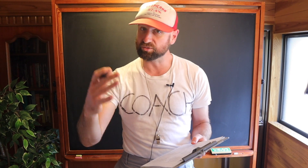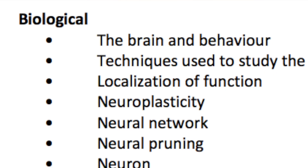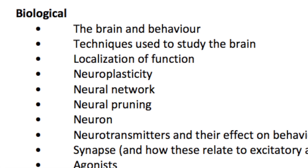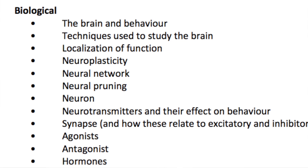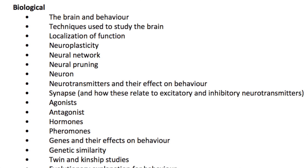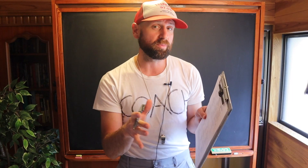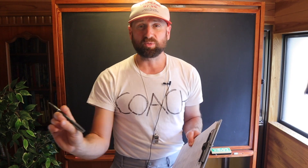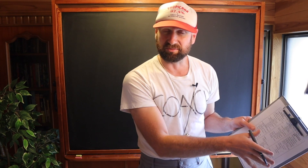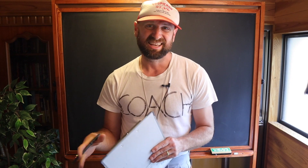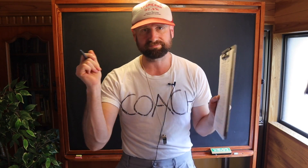Did we get through everything there? I think we did. These are all the possible SAQ questions: techniques to study the brain, localization, neuroplasticity, neural network, neural pruning, neurons, neurotransmitters, synapses — either excitatory or inhibitory — antagonists and agonists, one of each, hormones, pheromones, genes, genetic similarities, and evolutionary explanations of behavior. If you can define what those things are and in most cases explain how and why they affect behavior — or for techniques and genetic similarities, explain how and why they're used to study behavior — and give an example study, you're doing great to be on track for your SAQs. For essays, go for two or three studies and add some critical thinking. You're well prepared.